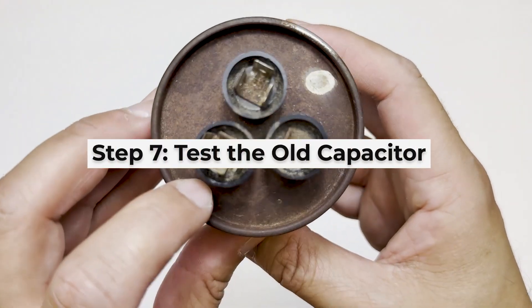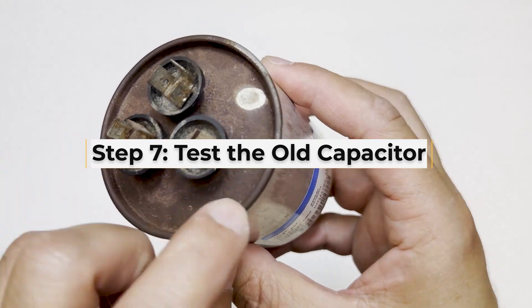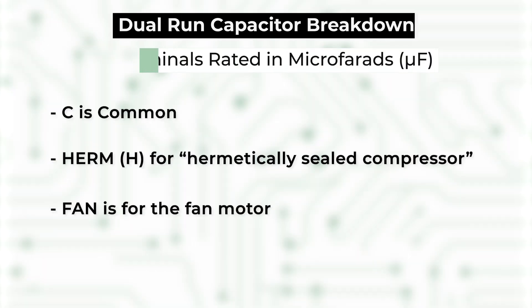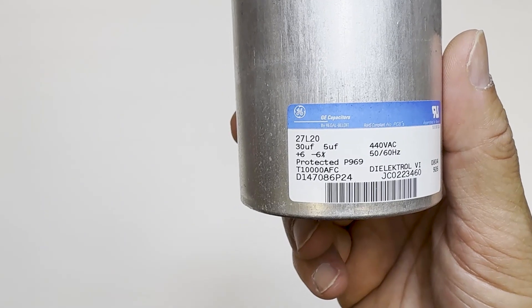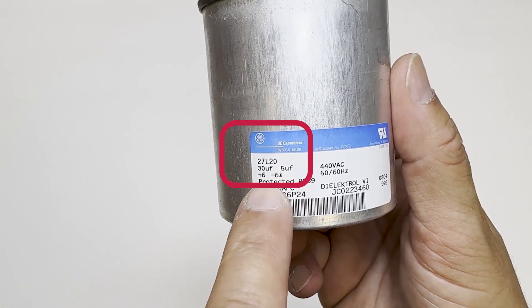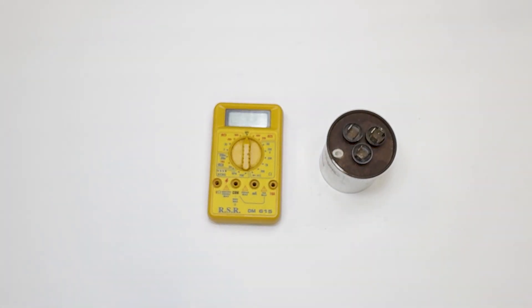Step 7: Test the old capacitor. You can see our capacitor is bad. It's domed and bubbled up, but we'll test it with a multimeter anyway. The capacitor has three terminals. C is for common, herm for hermetic compressor, and fan. Looking at the labels of the capacitor, confirming again that it is 30 by 5 microfarads with plus or minus 6%. We will test it with a basic multimeter and another multimeter that has the capacitance function.